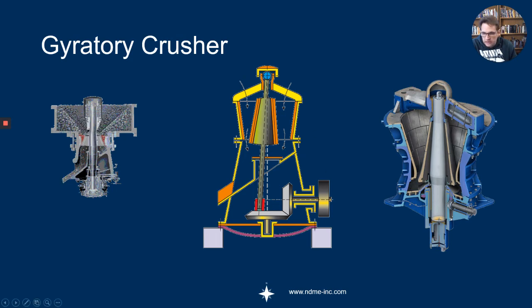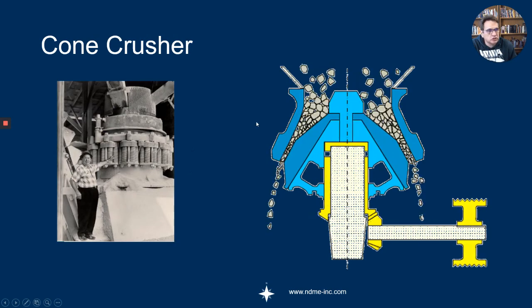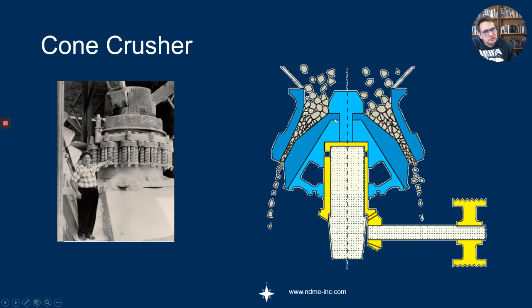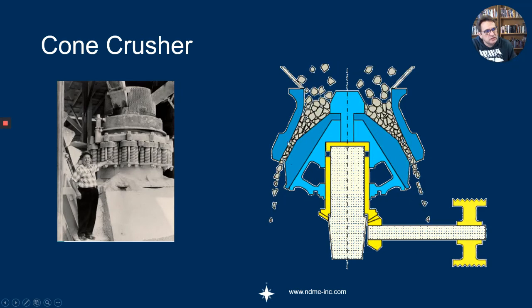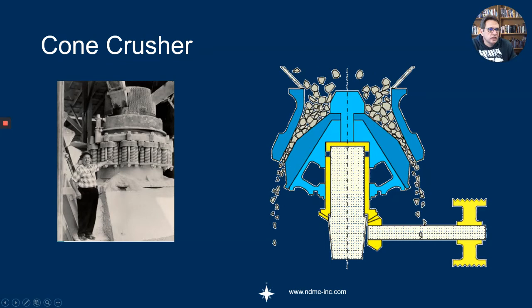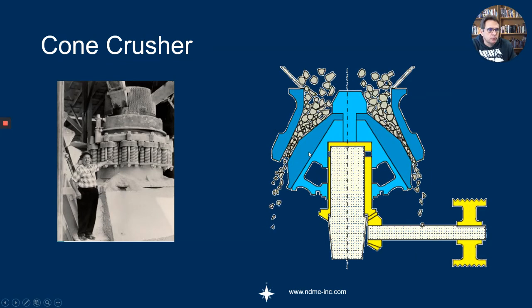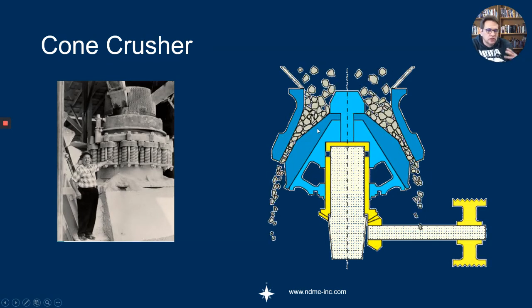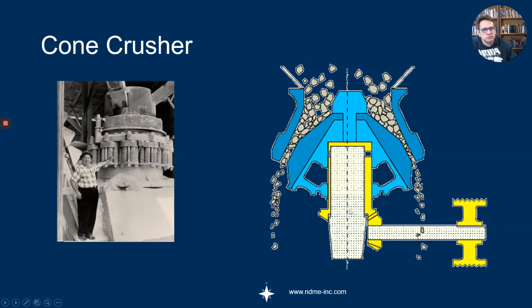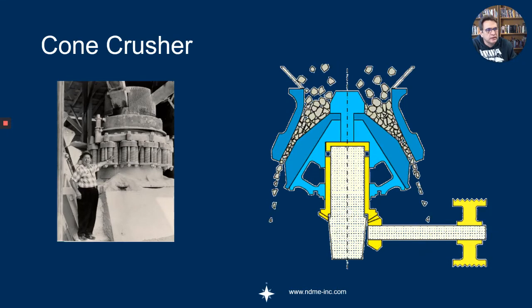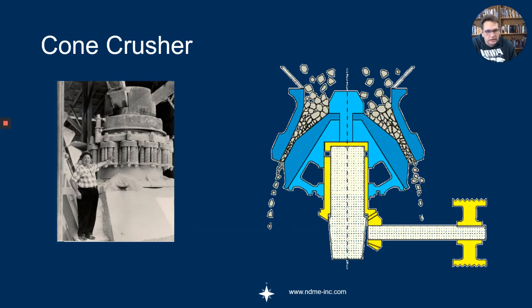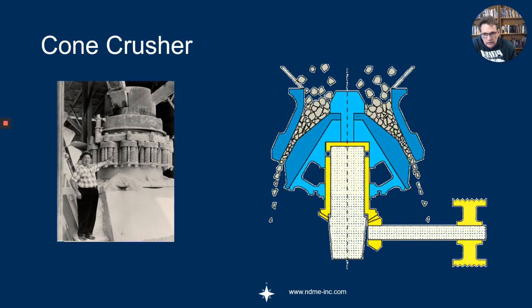The cone crusher has been around since the 1920s. It's similar, but often the profiles of the cone and the mantle is really what determines the particle distribution or the efficiency of the different types of cone crushers. They've also got the very similar hydraulic system to the gyratory crusher—also able to do tramp release, etc.